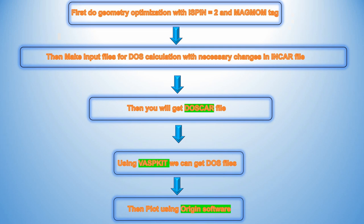I will tell you the step-by-step approach. First, do geometry optimization with ISPIN=2 and the corresponding MAGMOM tag. Then make an input file for DOS calculation with necessary changes in the INCAR. After running, you will get the DOSCAR file — this is a very important file for density of state calculation. Using VASPkit we can get our DOS files, whether LDOS, total DOS, or PDOS. Then we can plot using Origin.